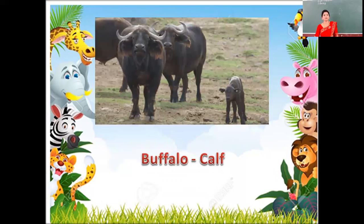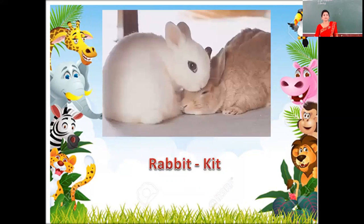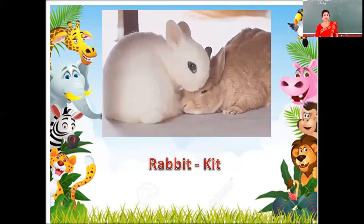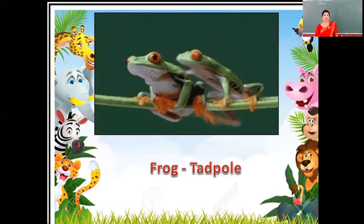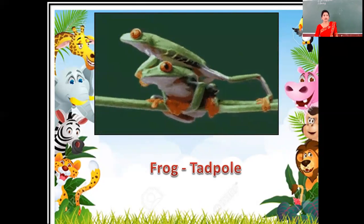Next feature is of buffalo and calf. Young ones of buffalo is calf. B-U-F-F-A-L-O, buffalo. C-A-L-F, calf. Next feature is of rabbit and kit. Young ones of rabbit is kit. R-A-B-B-I-T, rabbit. K-I-T, kit.